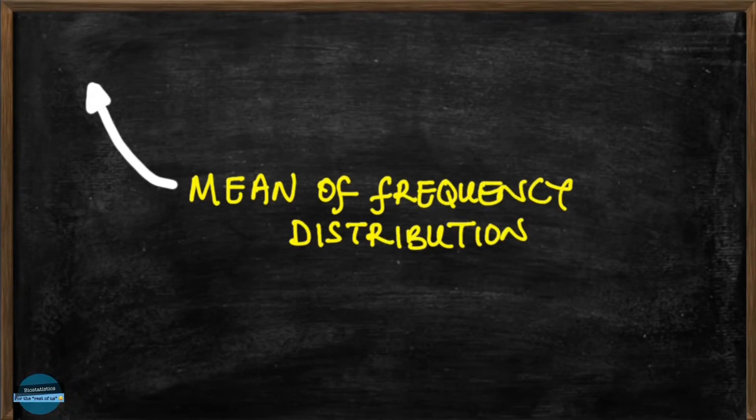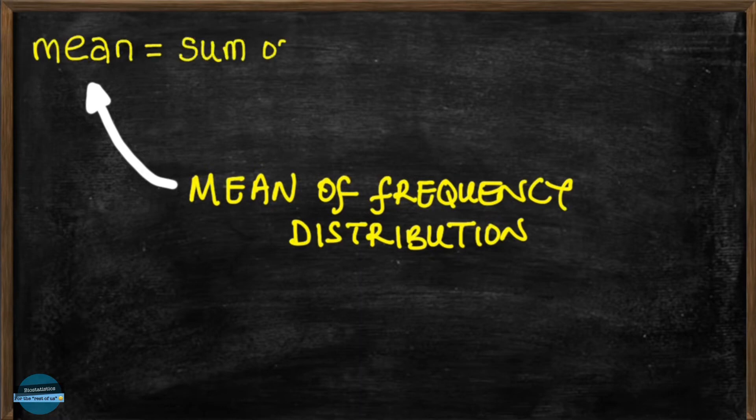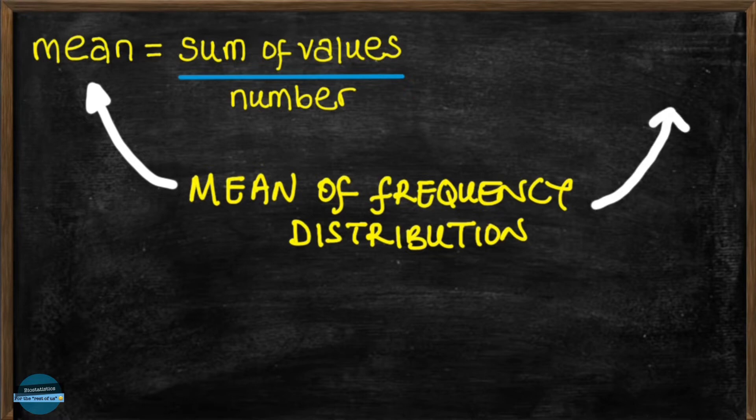We all know that the mean or average of a group of observations is the sum of all the values divided by the number of values, and it is rightly represented by this simple formula. X bar is equal to sigma x divided by n. Now, if you are not familiar with this notation, you can check out the link to the previous video that explains this with examples in the card above.